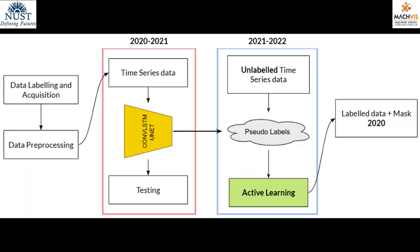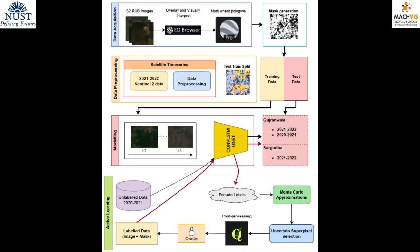Therefore, as a solution, we put forward a complete framework that eliminates the need for manual data collection from farmers to generate large-scale crop maps in data-sparse regions. This framework intelligently annotates unlabeled data and only queries the human labeler for annotations at locations where the system itself becomes uncertain.